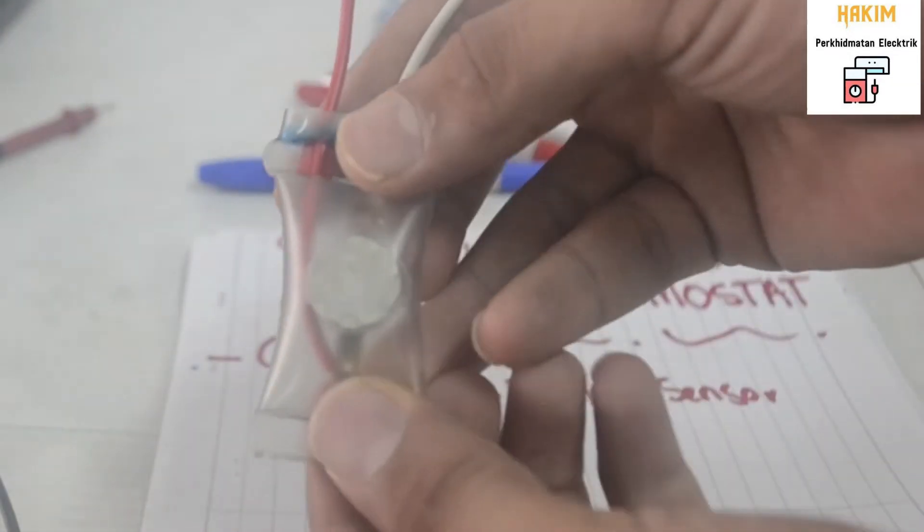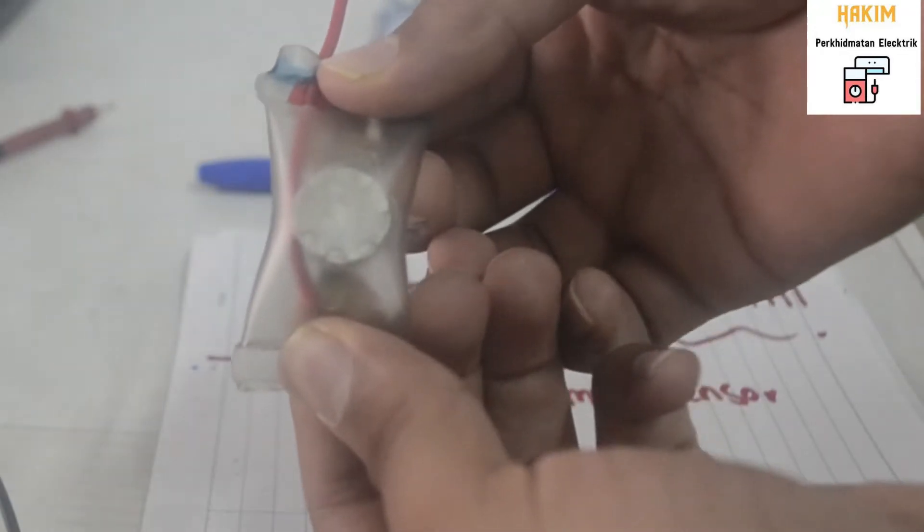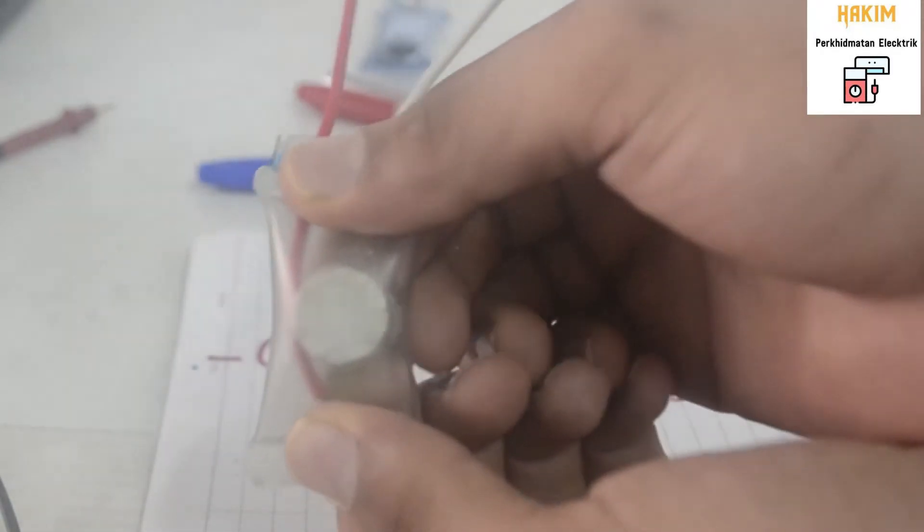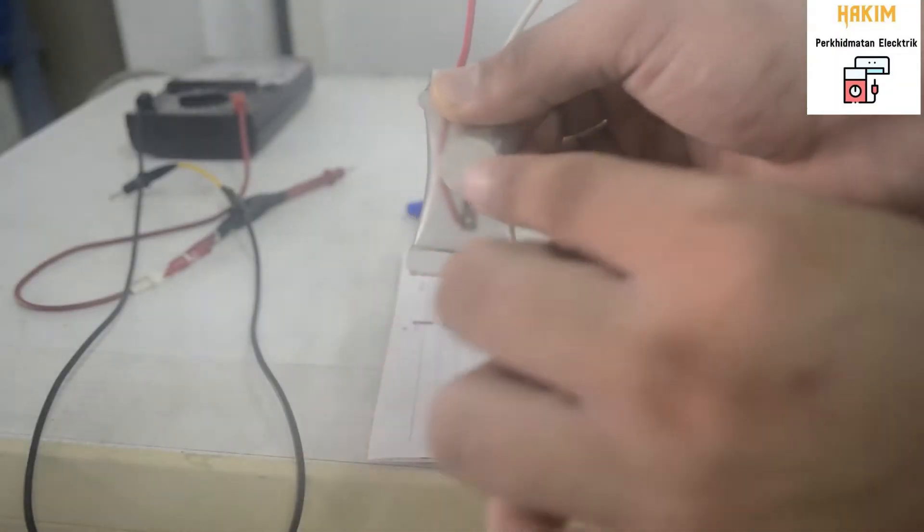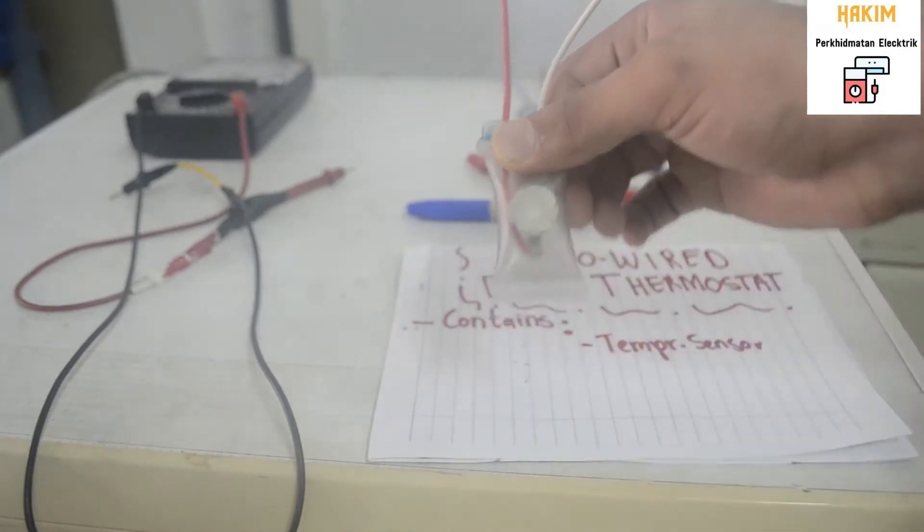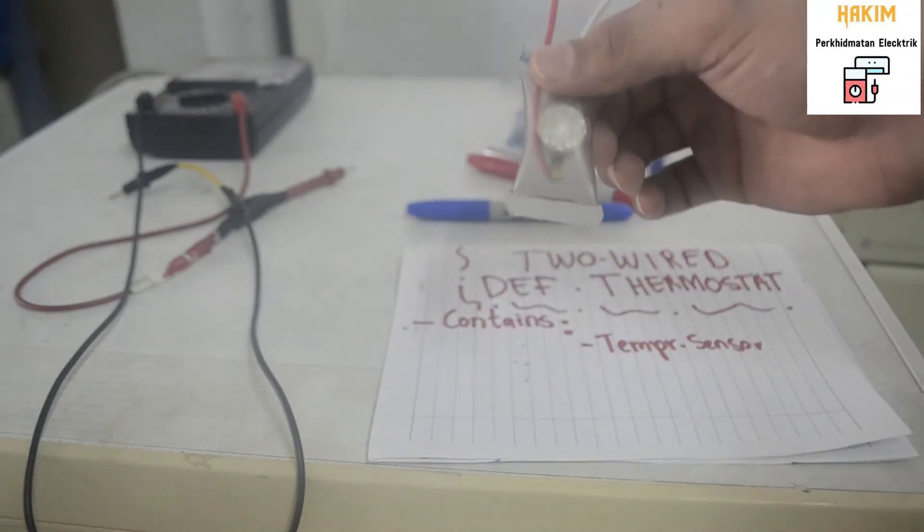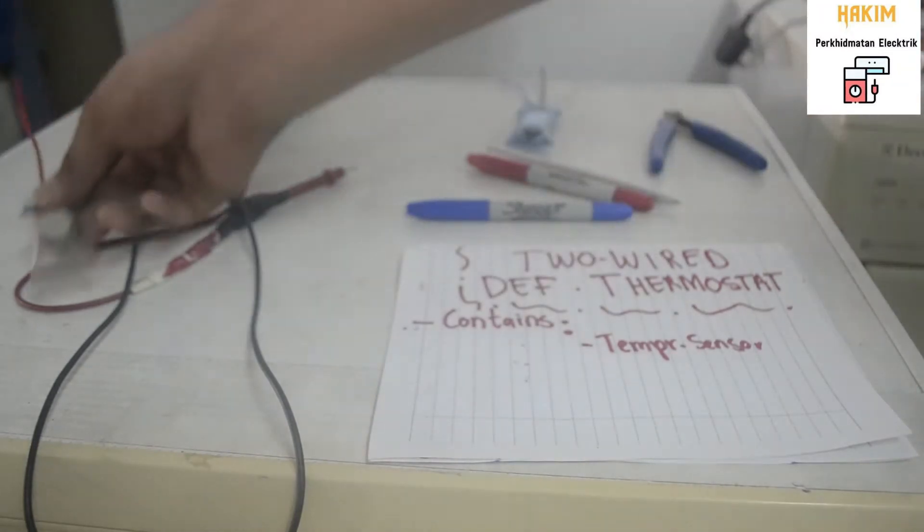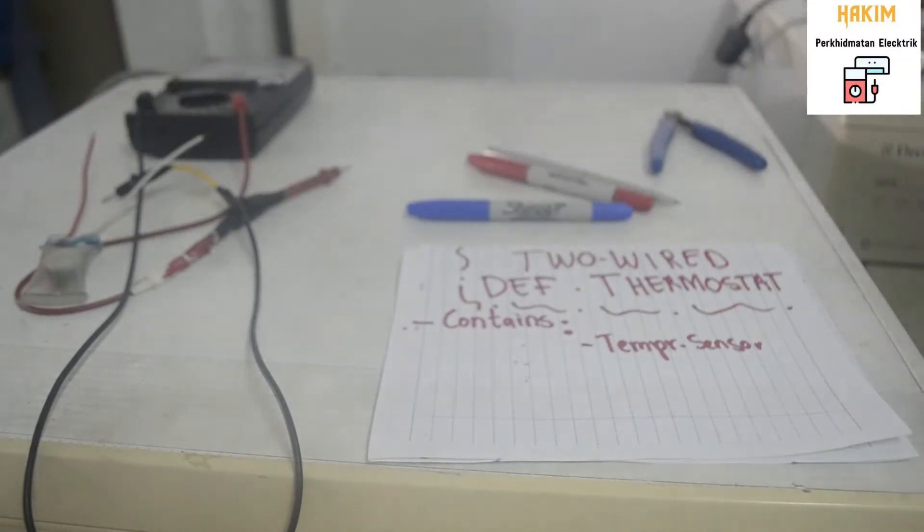As you guys can see, there is only a single temperature sensor there, there's nothing else there. It's just a circular shaped temperature sensor. There are usually cubic ones, there are usually the round shape, this is a round shaped one. It just represents different models of the thermostats and it sometimes works with different models of the refrigerator.